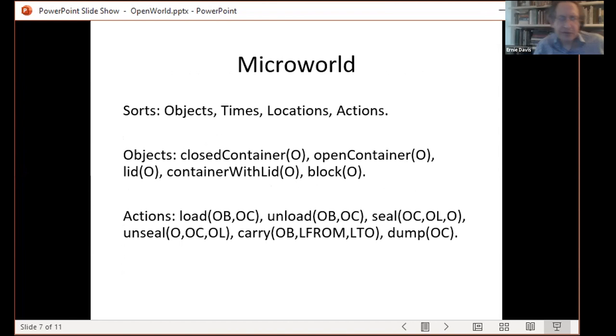So, the micro world going down into the details of it. The micro world has currently four sorts: there are objects, times, locations, and actions. Five types of closed containers, open containers, open containers, lids, containers with lids which is a pair of objects, and blocks. And five, sorry six actions: to load an object into a container, to unload an object from a container.